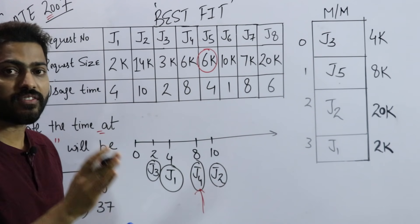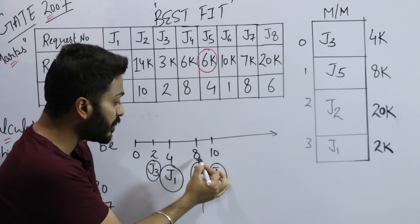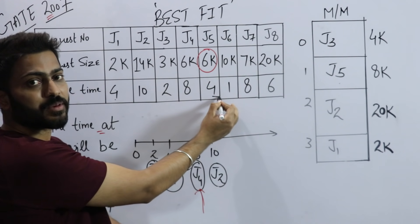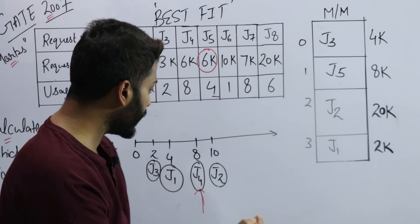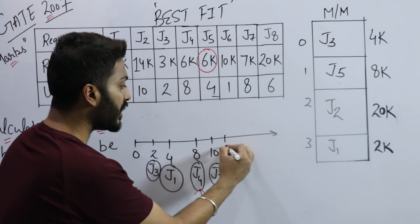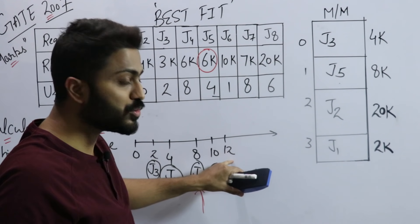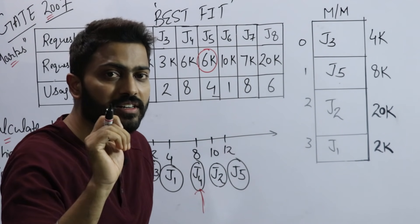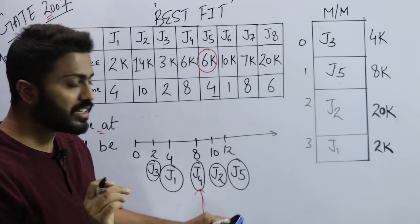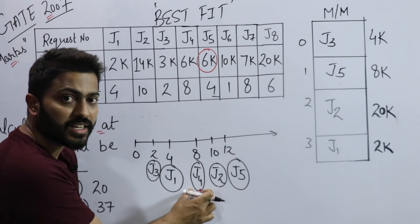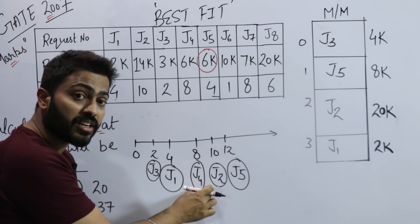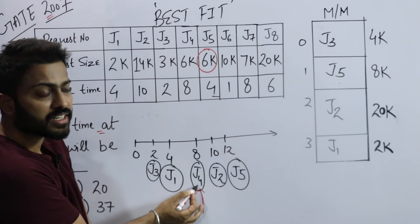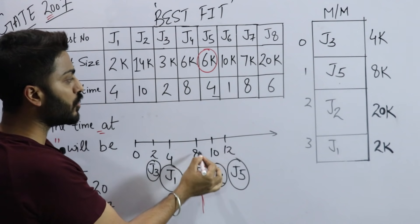If J4 completes at time 8, remove it from there. Let's say J4 completed at time 8, so I remove it and place J5 there. So when will J5 enter RAM? At time 8. When time reaches 8, J5 will enter. But when will J5 exit? It needs 4 more seconds, so 8 plus 4 equals 12. This means when time reaches 12, I will remove J5.